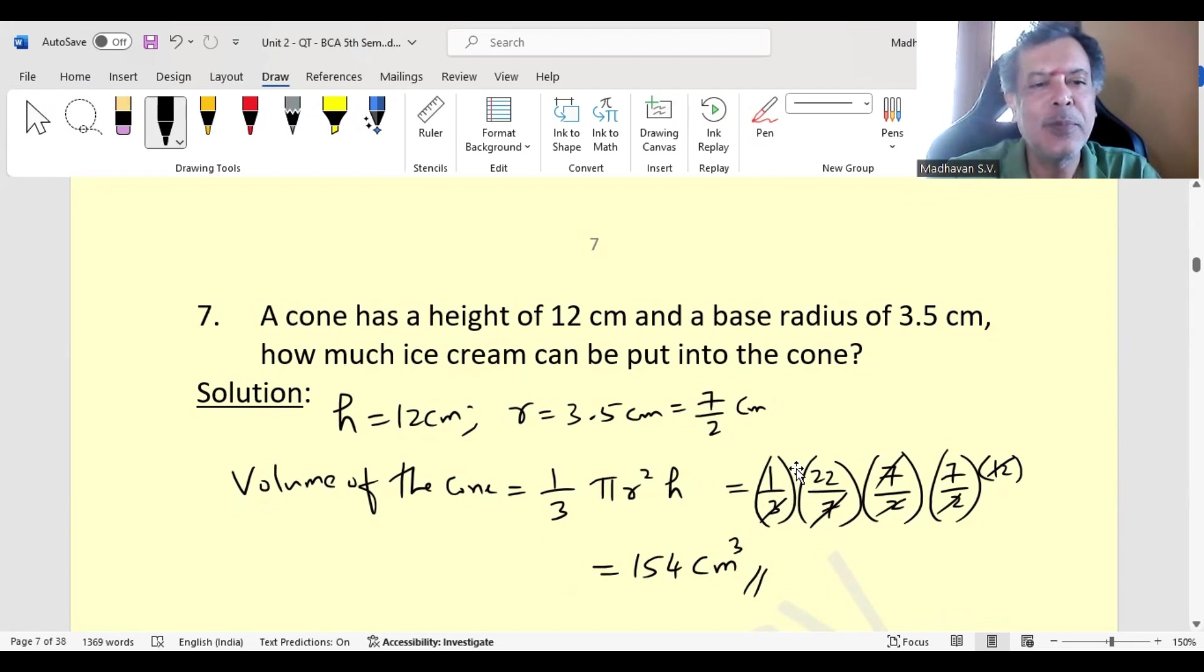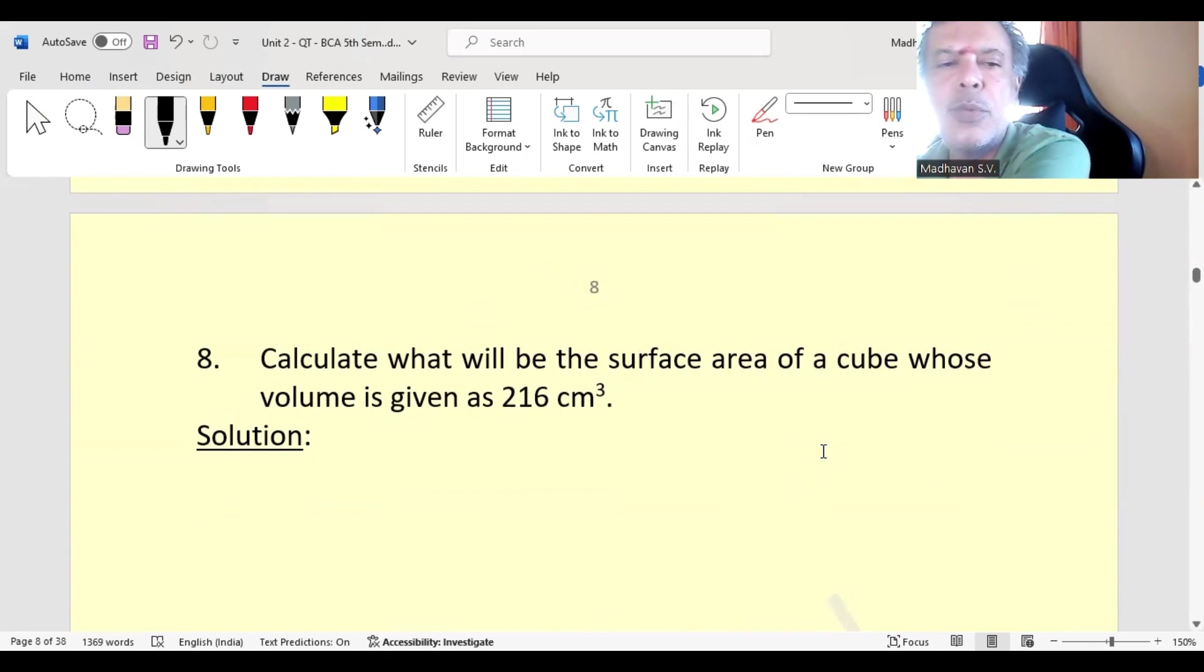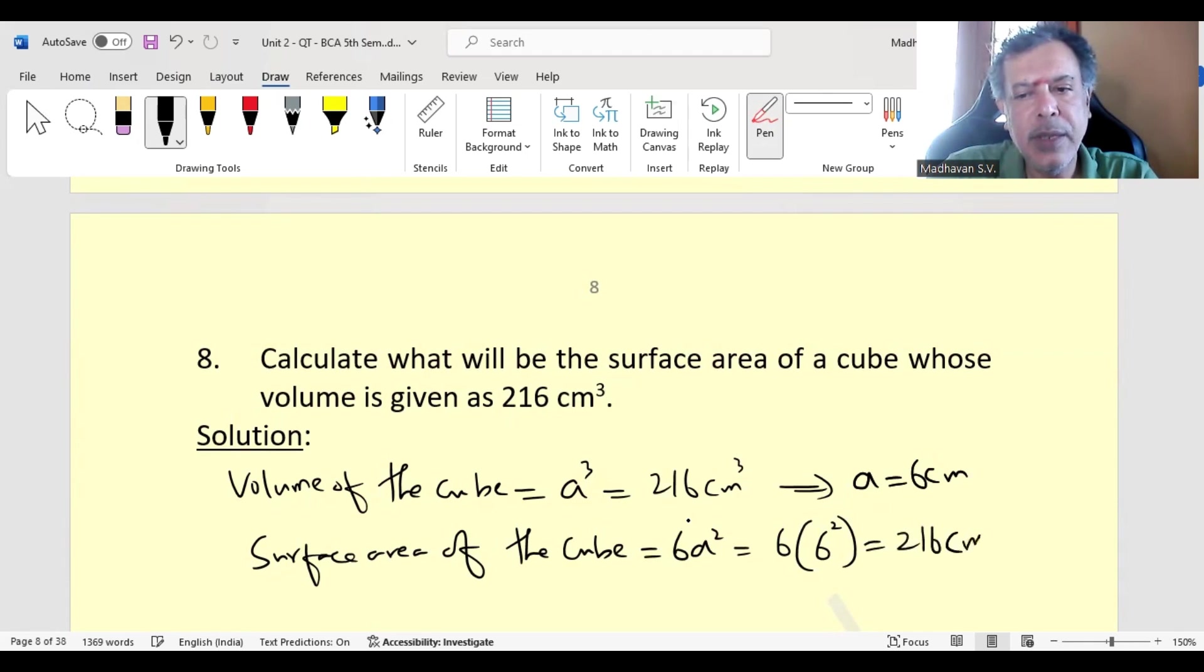Let us move on to the next problem. Calculate the surface area of a cube whose volume is given as 216 centimeter cube. Volume of the cube is a cube and that is given as 216 centimeter cube, which means a will be 6 centimeter. Surface area of the cube is 6 times a square, which is 6 times 6 square, which will give us 216 centimeter square.